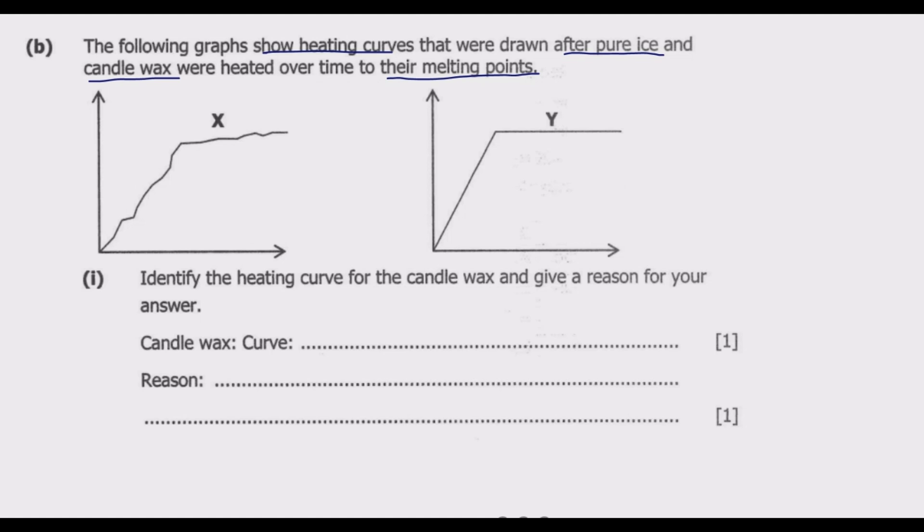Pure ice is a pure substance, and a pure substance has an exact boiling and melting point. Hence, if you look at this curve, at this point exactly, the ice must melt because it's pure. So this should be pure ice curve Y.